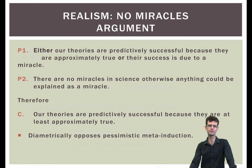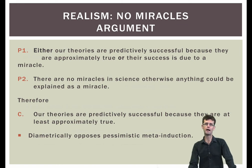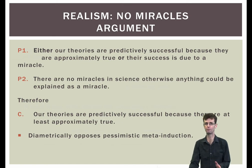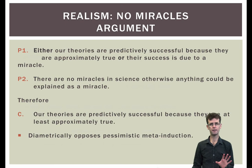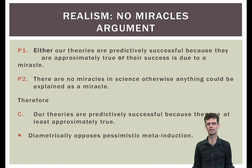This can be cast as a disjunctive syllogism. Either our theories are true or approximately true, and what they talk about exists or likely exists, and this is why they provide successful predictions — or, by some miracle, they provide successful predictions in spite of being false. There are no miracles in science. Therefore, our theories are true or approximately true, and what they talk about exists or likely exists. Note, however, that what counts as a miracle has not yet been clearly defined. The PMI and the NMA are in tension — each is an attempted refutation of the other — but neither argument is decisive, as both are vague, and so no refutation is possible.